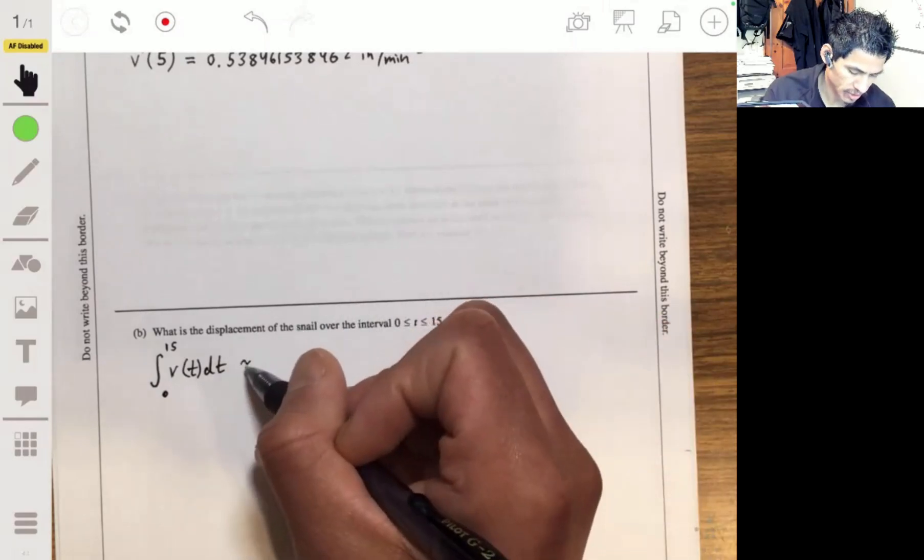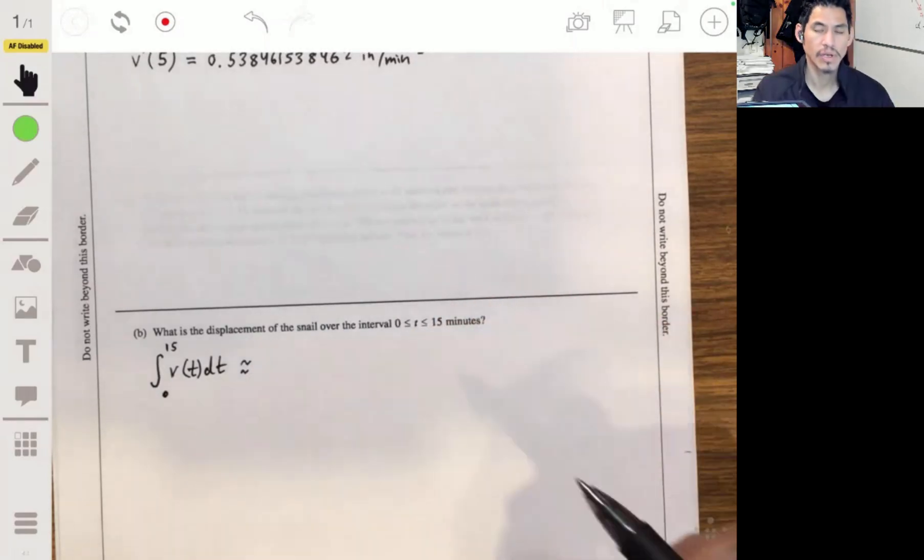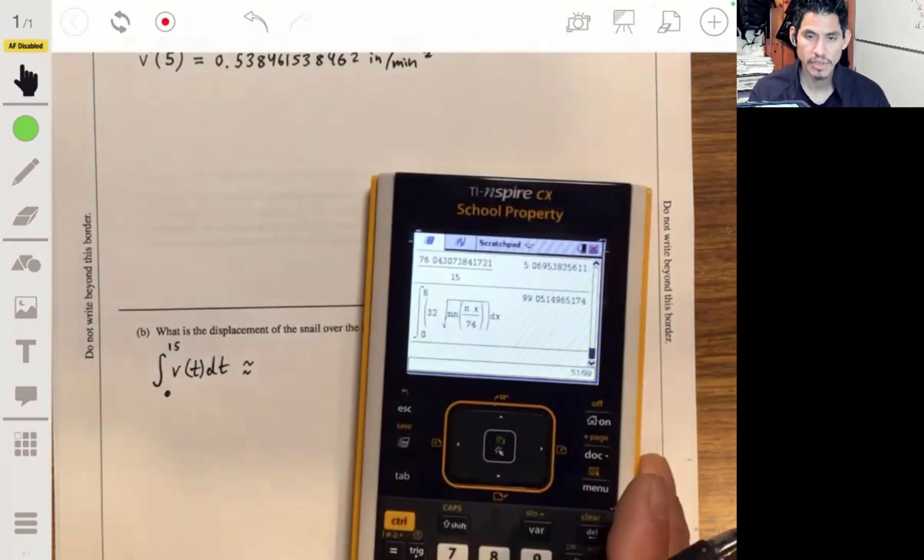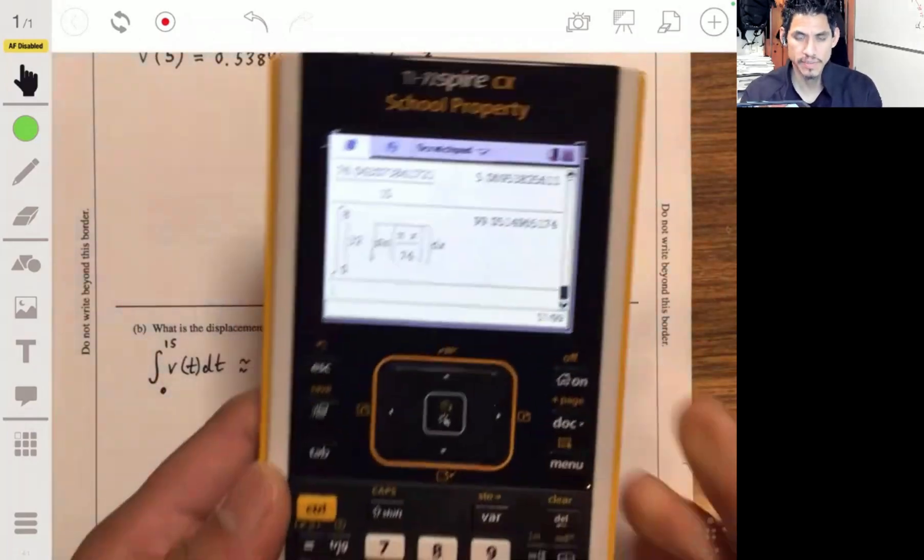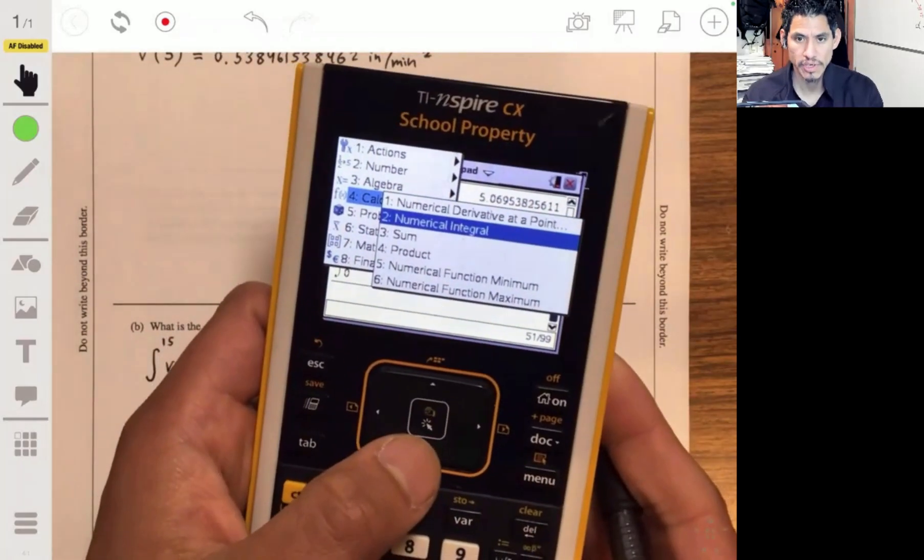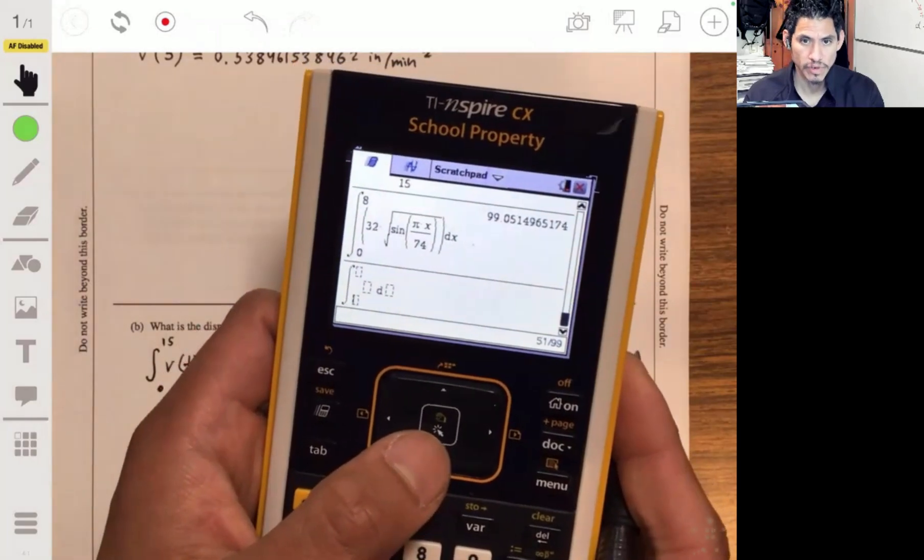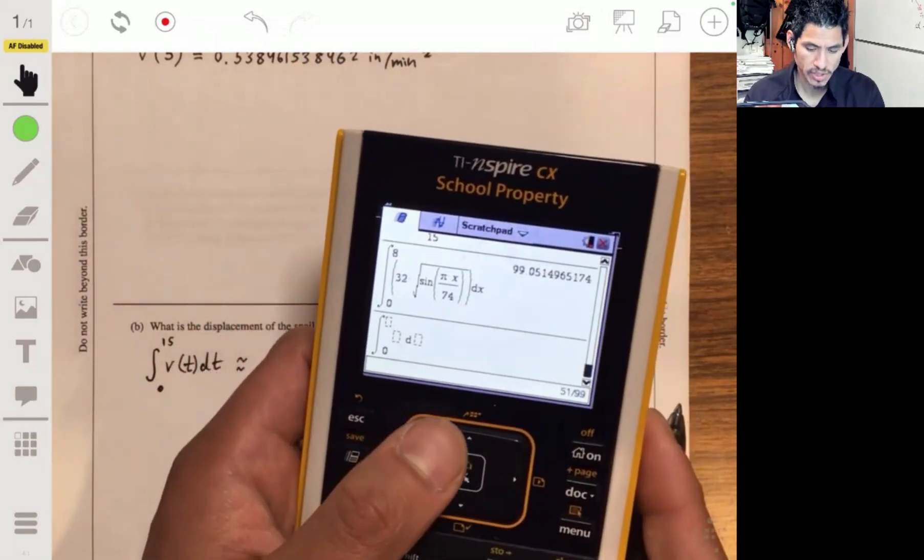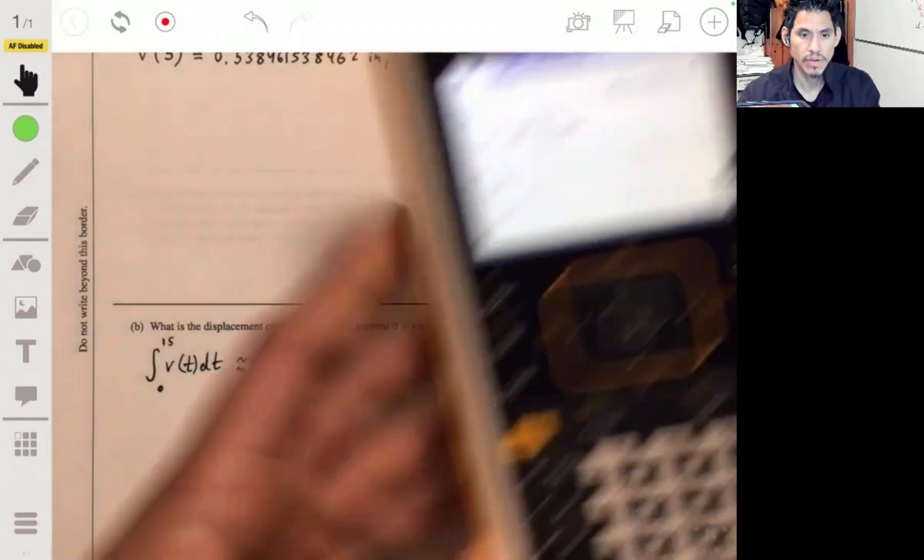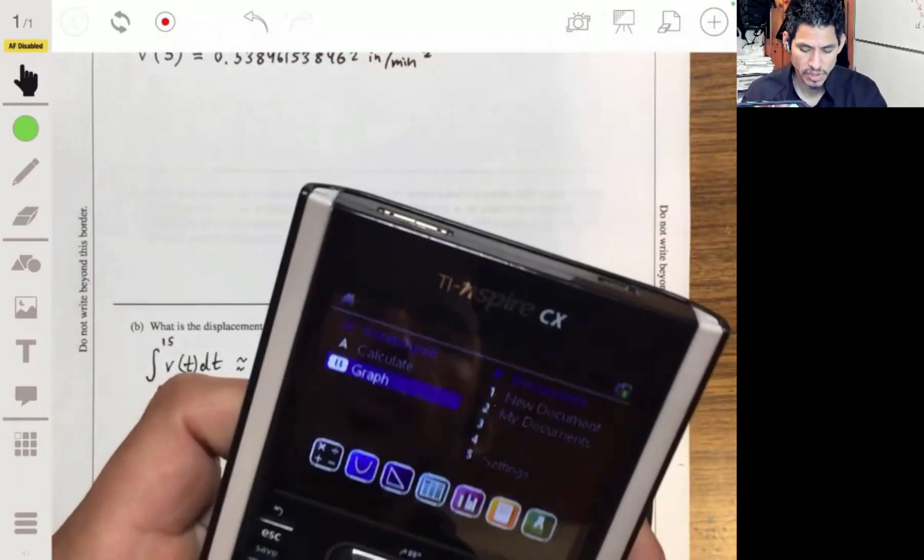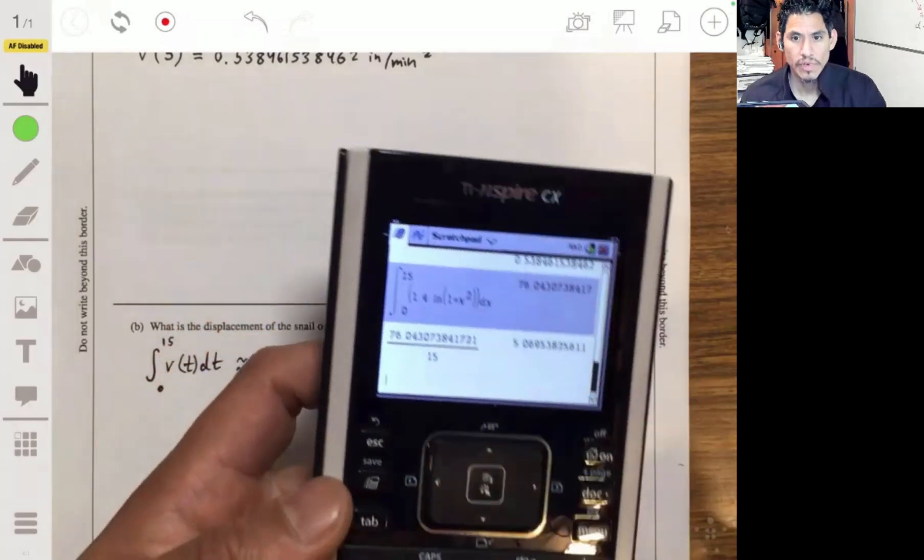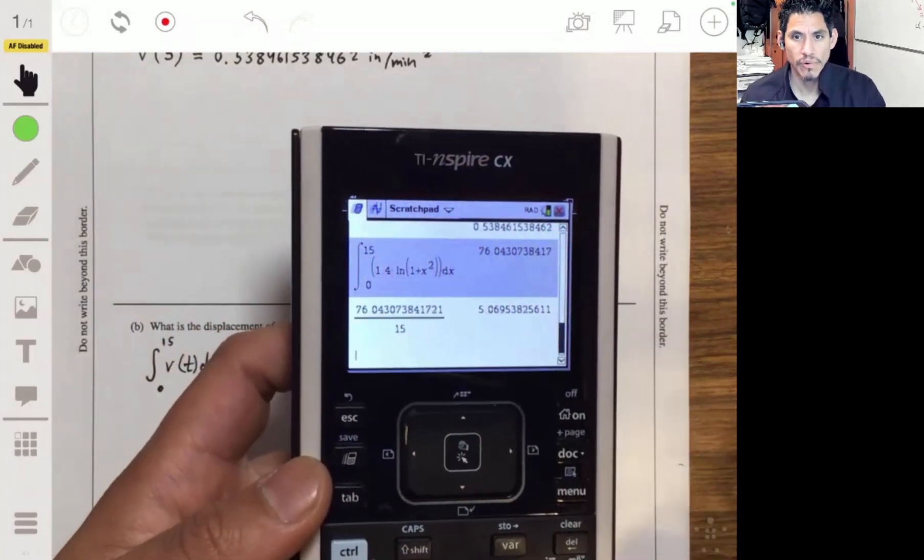And again, using your calculator, there's usually going to be a straight-up calculus section. I like to use the Inspire, but if you go to the calculus function, you can find the numerical integral from 0 to 15. I think I just did it here to save you guys some time. We've got about 76.043.